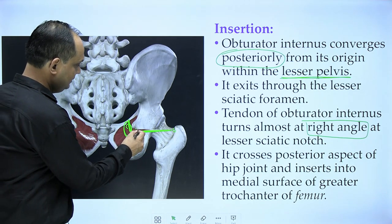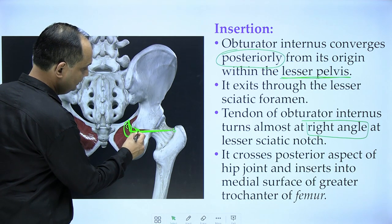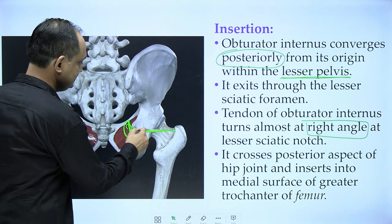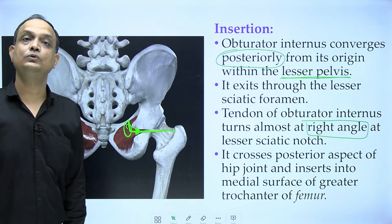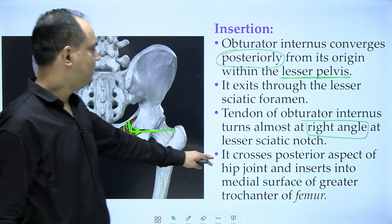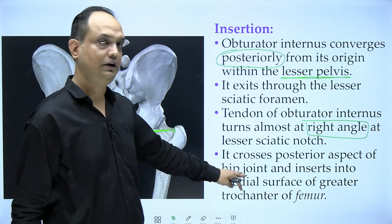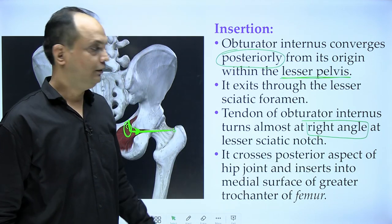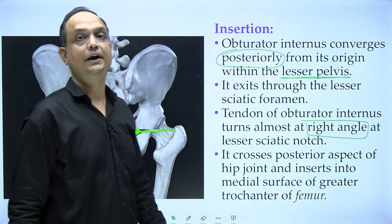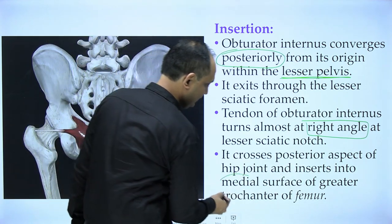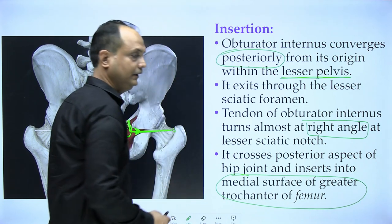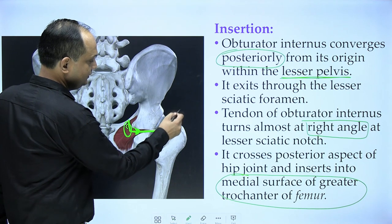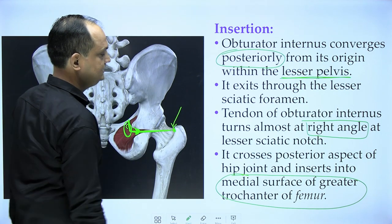Below the ischial spine there is a small groove where this tendon makes almost a 90-degree turn. It then crosses the posterior aspect of the hip joint and ultimately inserts into the medial surface of the greater trochanter of the femur. This is an important spotting question — if you see a mark on the medial side of the greater trochanter, the answer is the tendon of obturator internus.